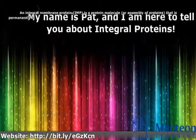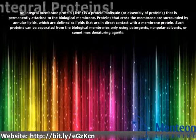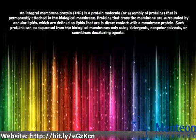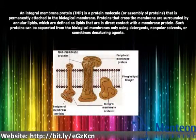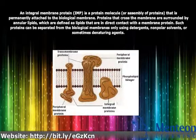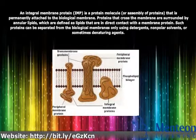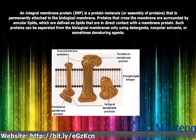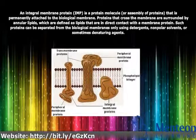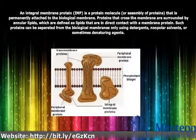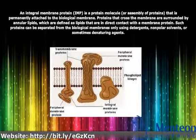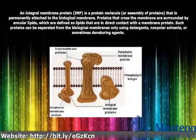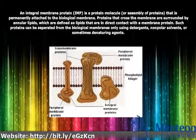An Integral Membrane Protein is a protein molecule, or assembly of proteins, that is permanently attached to the biological membrane. Proteins that cross the membrane are surrounded by annular lipids, which are defined as lipids that are in direct contact with a membrane protein.